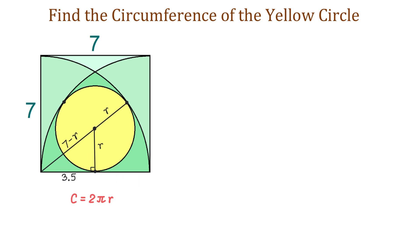In this right triangle, we will apply the Pythagorean theorem and we will write that r² plus 3.5² equals (7 minus r)². If we solve this equation, then we will find r.